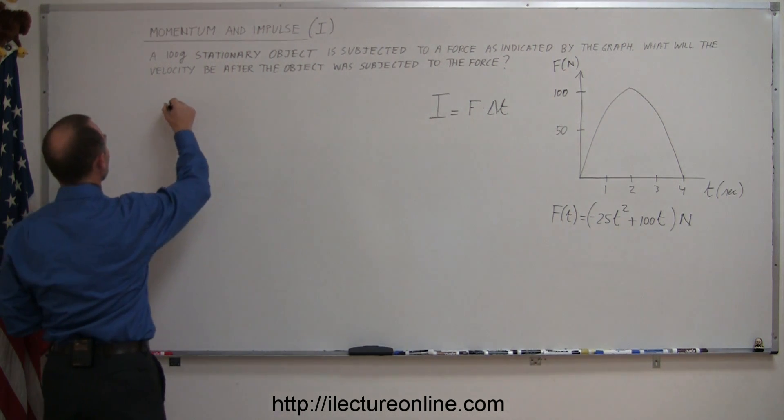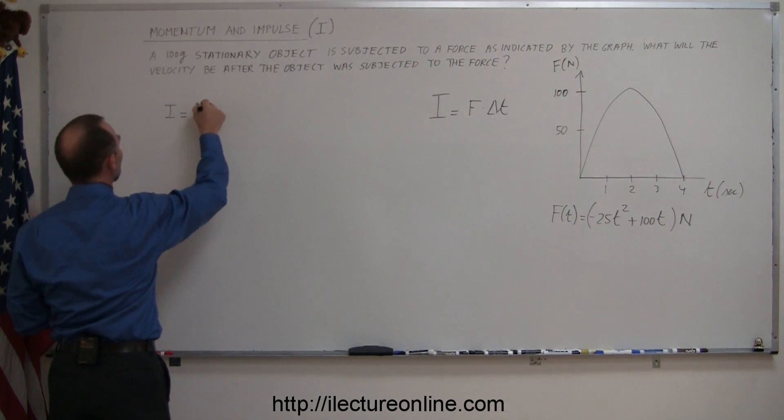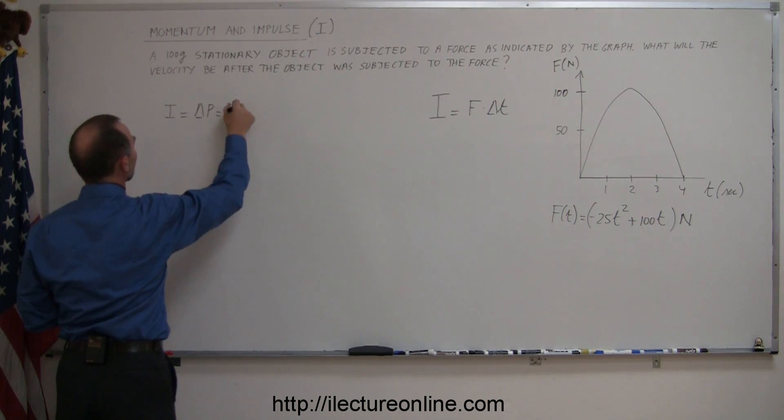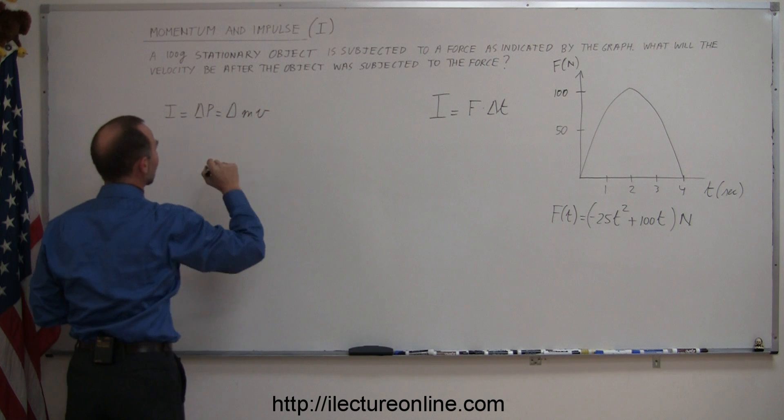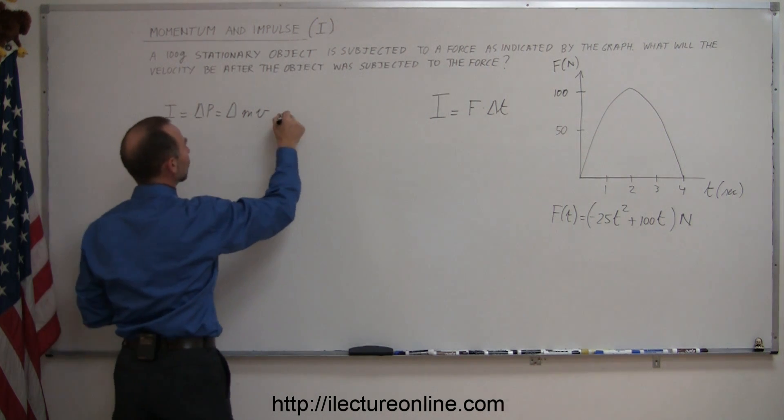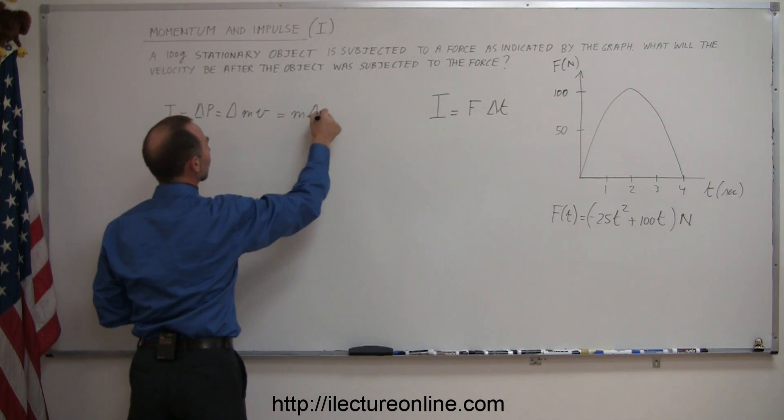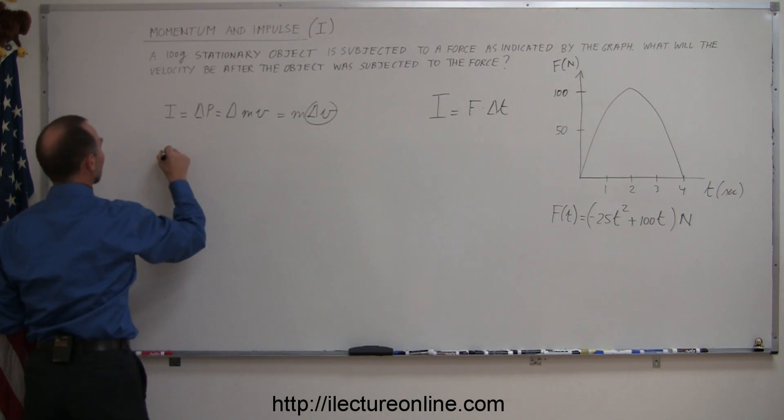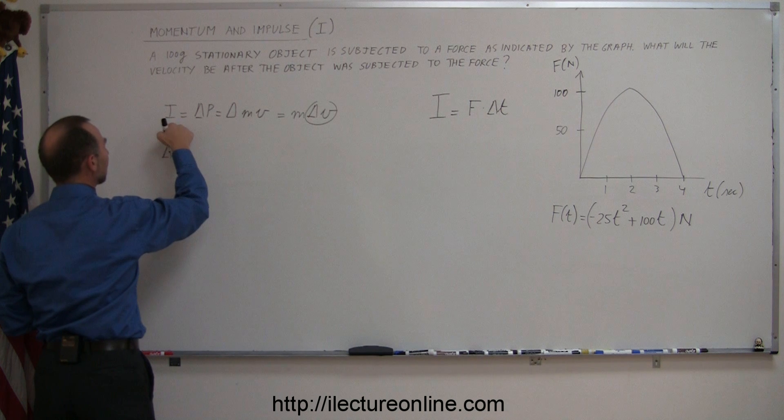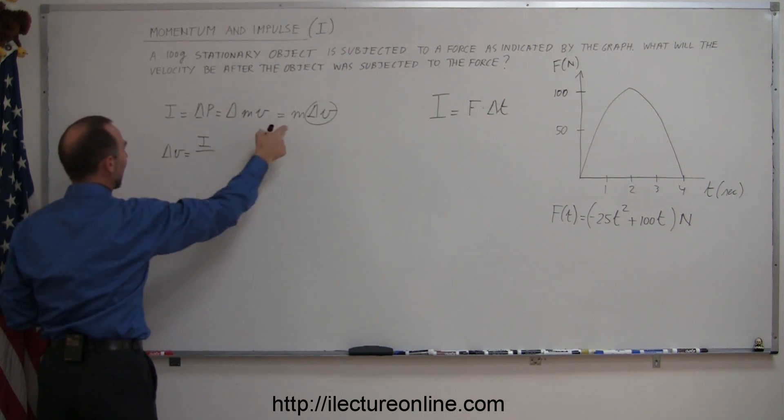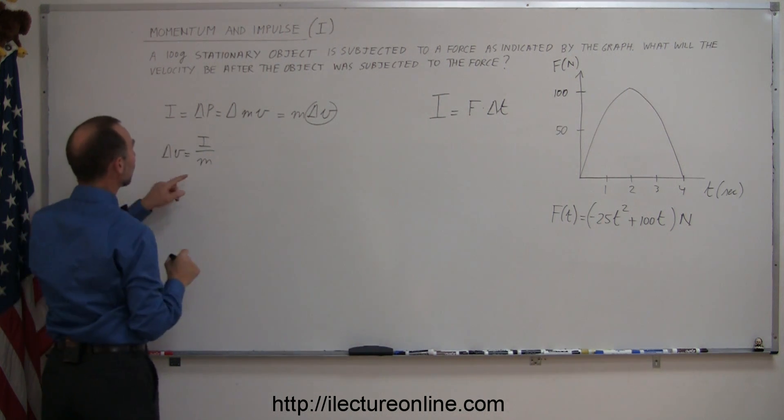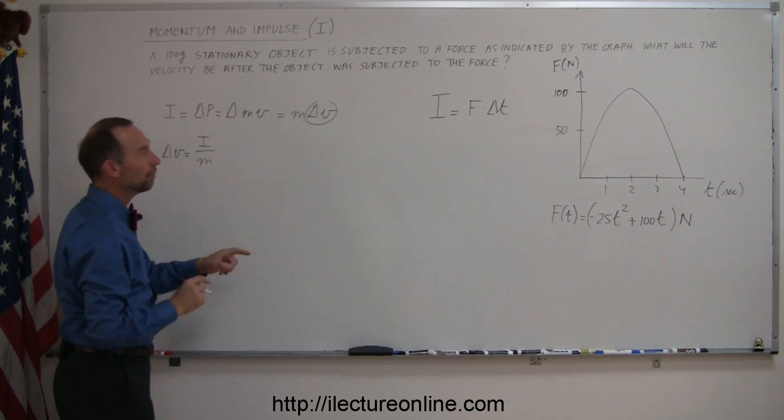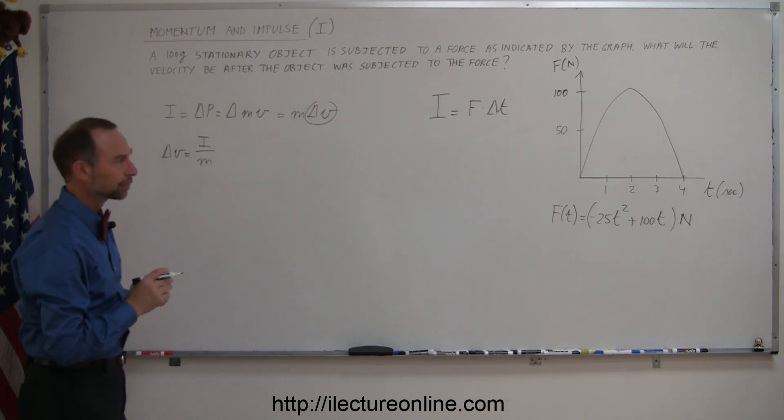The concept is still the same. We know that the impulse is equal to the change in the momentum, which is equal to the mass times the velocity of the object. Since the mass is unchanged, it's equal to the mass times the change in the velocity. Solving for the change in velocity, we can say that ΔV is equal to the impulse divided by the mass.